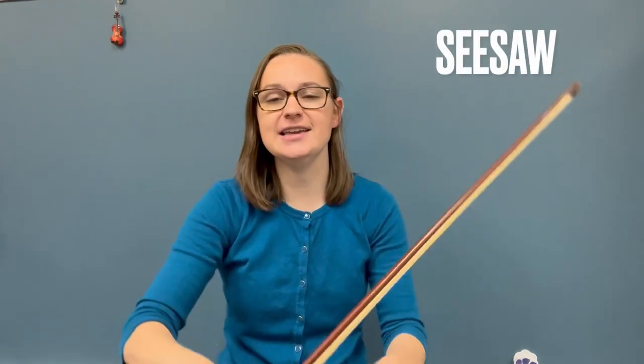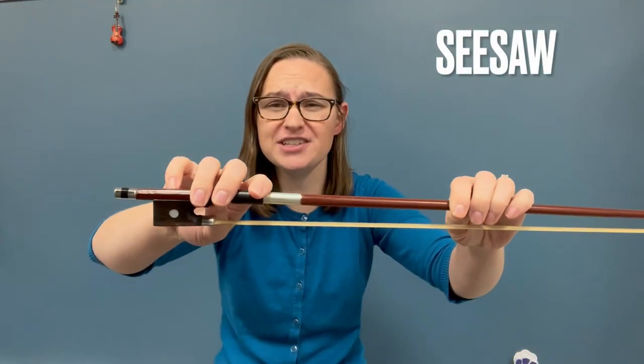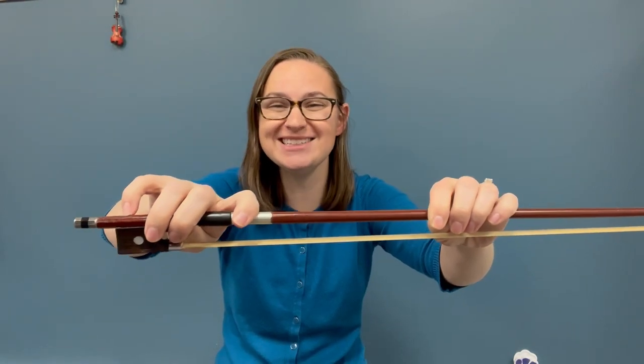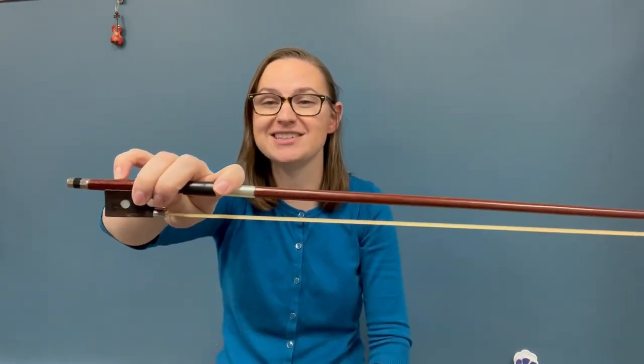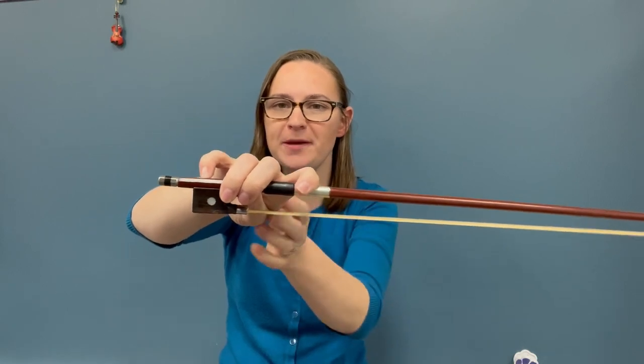Our next exercise is the seesaw. For the seesaw, you are going to again start with your good bow hold, but this time you're going to keep your bow horizontal. This one's a workout for your pinky and your thumb.